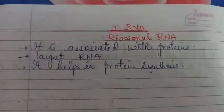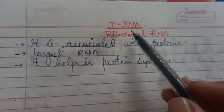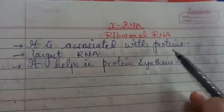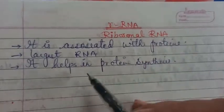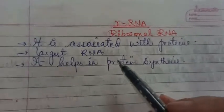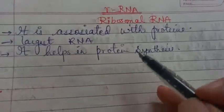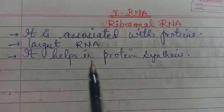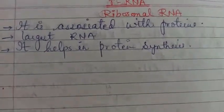Transfer RNA is also called adapter RNA. Now the third and last type of RNA is rRNA, also called ribosomal RNA. It is associated with protein synthesis. It is the largest. tRNA is the smallest and rRNA is the largest in size. And it also helps in protein synthesis. So this was all about RNA in detail.